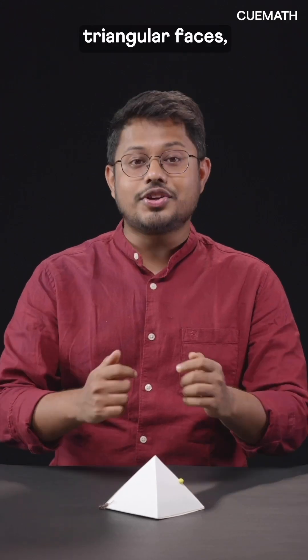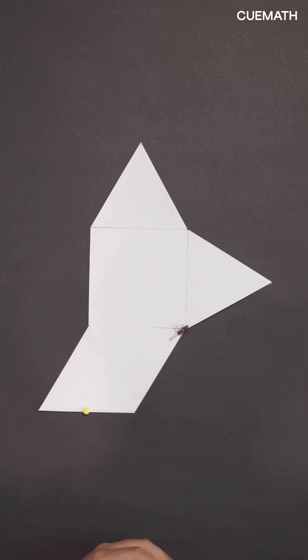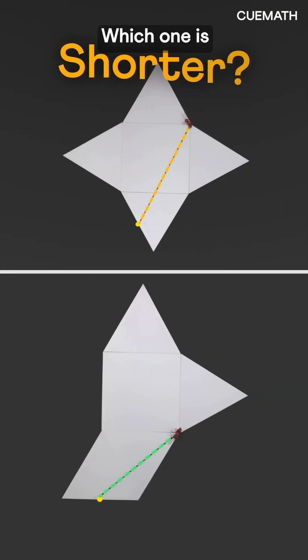And if the ant travels along the triangular faces, we must open the pyramid like this. The shortest path is this straight line. Which one is shorter?